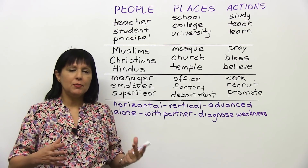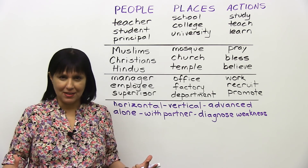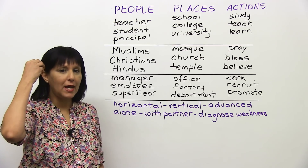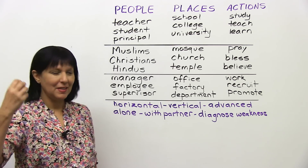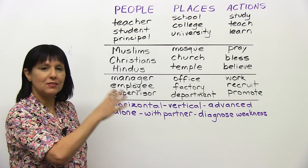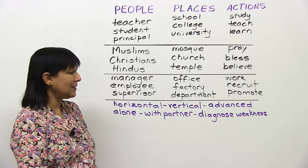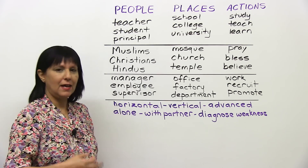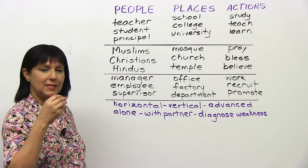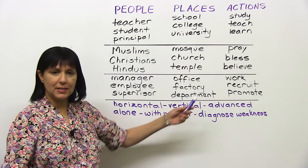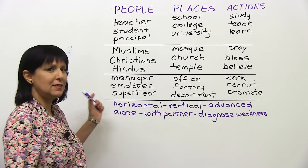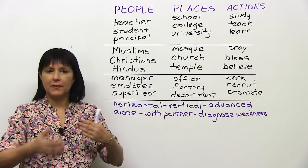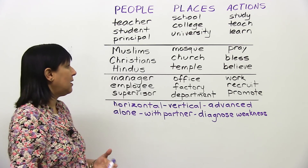Even though it seems like a really simple exercise, what will happen is that as you start to try to remember words from your active vocabulary related to certain themes, you might find that you can't actually think of too many examples in a particular area. You'll then be able to diagnose your weaknesses — for example, knowing that you need to learn more business vocabulary, but that you're okay with education, or vice versa.